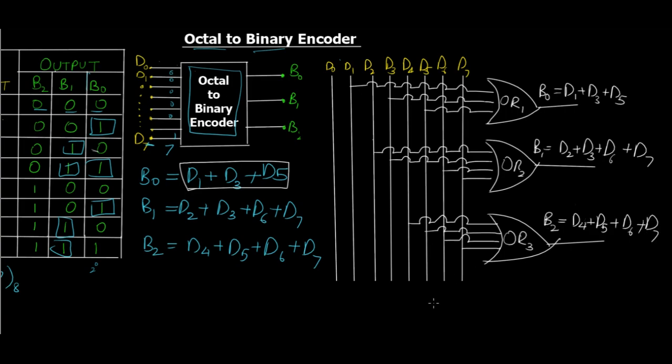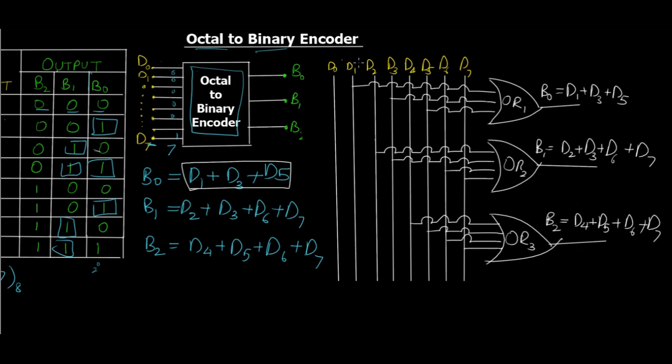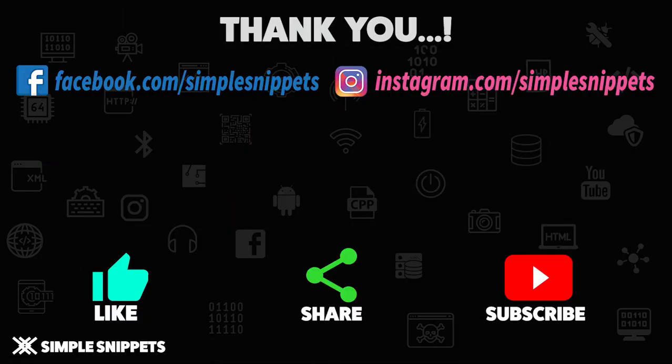So yeah, this is the circuit diagram for an Octal to Binary Encoder. This might sound a little bit complicated, but once you have the output expressions, you can easily draw the input lines and then draw out the necessary lines depending upon each of the expressions. Pretty simple, right?